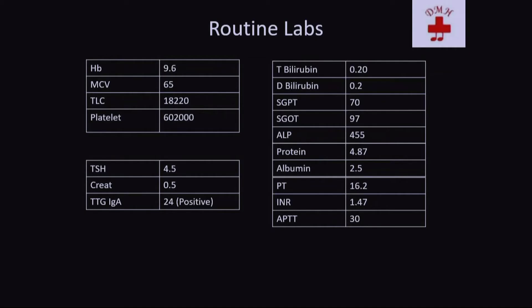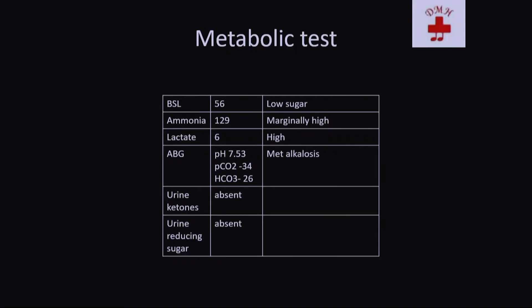The routine investigations: hemoglobin was 9.6, MCV on the lower side, total counts were normal, platelets fine, TSH was normal, creatinine was 0.5, liver transaminases were fairly normal, coagulation profile slightly deranged. Metabolic workup showed BSL 56 — slightly on the lower side, ammonia was high, lactate was on the higher side, ABG showed metabolic alkalosis, urine ketones were absent, and urine reducing sugars were also absent.